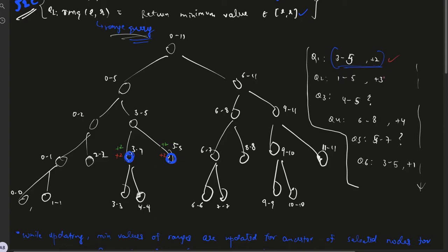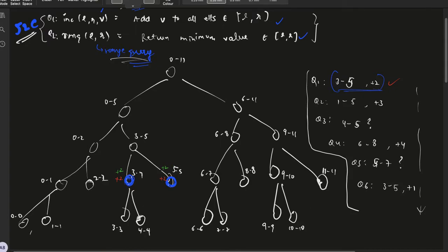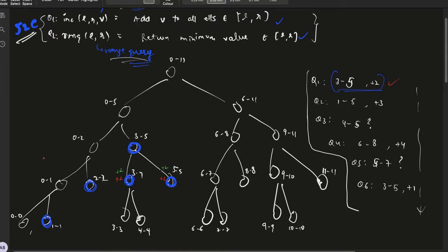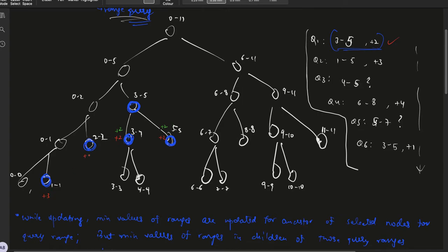With query 1 done, we move to query 2 where we need to add +3 to the range 1 to 5. The nodes identified for this range are these nodes. We need to add +3, so the lazy values for these nodes become +3. We will add +3 to lazy as well. This query is also done.